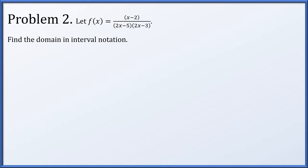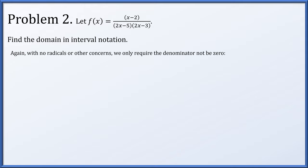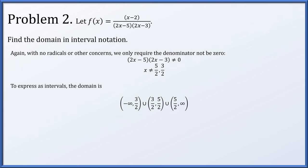For problem two, let f of x equal x minus 2 over 2x minus 5 times 2x minus 3, and we just need to find the domain. There are no radicals or anything; we simply have one polynomial divided by another, so the denominator can't be zero, which means x cannot be five halves, and it also cannot be three halves. In interval notation, this is all real numbers except specifically excluding three halves and five halves.